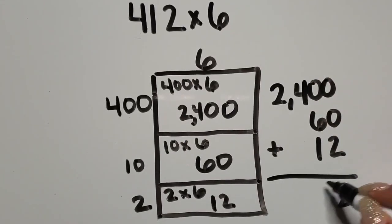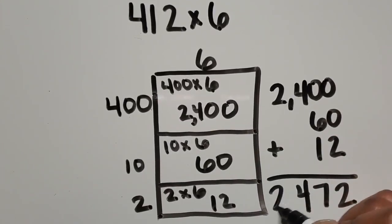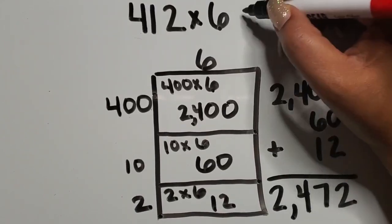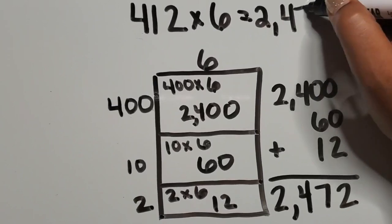So we have 2 in the ones place, 7 in the tens place, 4 in the hundreds place, and then 2 in the thousands place, so the product, again, is 2,472.